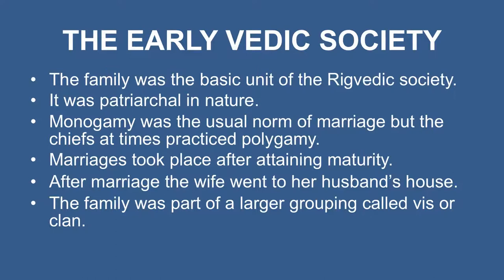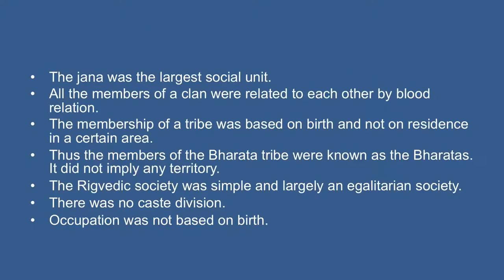The family was the basic unit of the Rig Vedic society. It was patriarchal in nature. Monogamy was the usual norm of marriage, but the chief at times practiced polygamy. Marriages took place after attaining maturity. After marriage, the wife went to her husband's house. The family was part of a large grouping called viz or clan. One or more clans made a jana or tribe. The jana was the largest social unit. All the members of a clan were related to each other by blood relation, and membership of a tribe was based on birth and not on residence in a certain area. Thus, the members of the Bharat tribe were known as Bharatas.